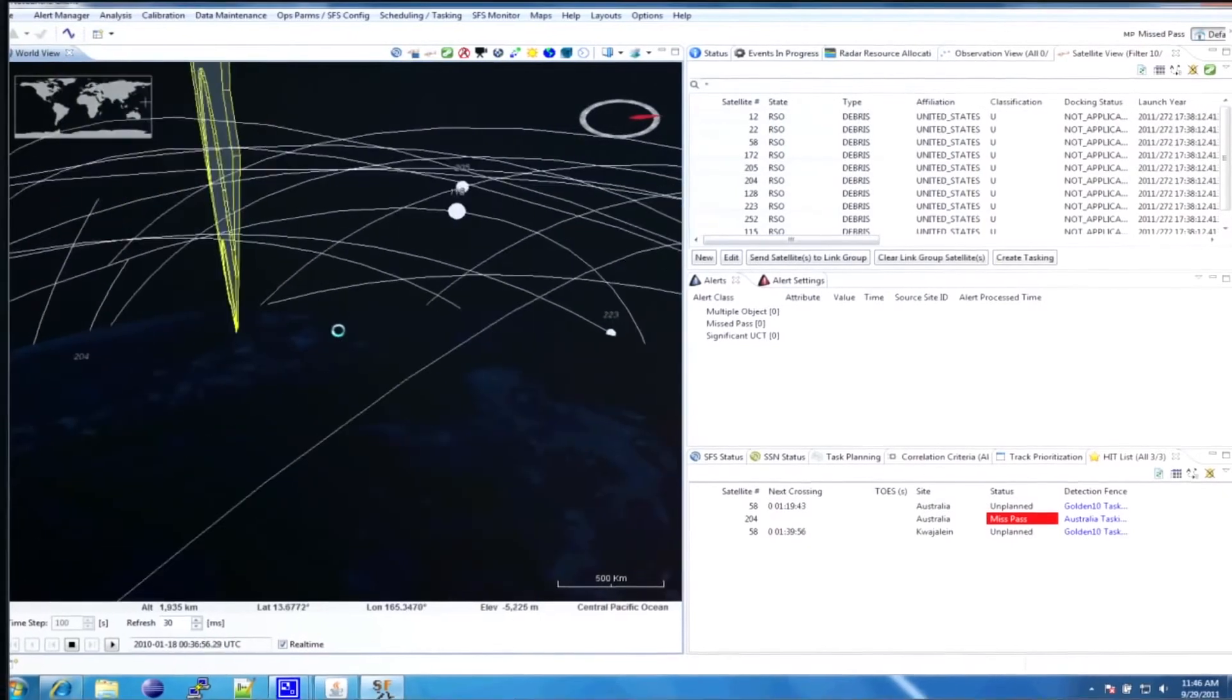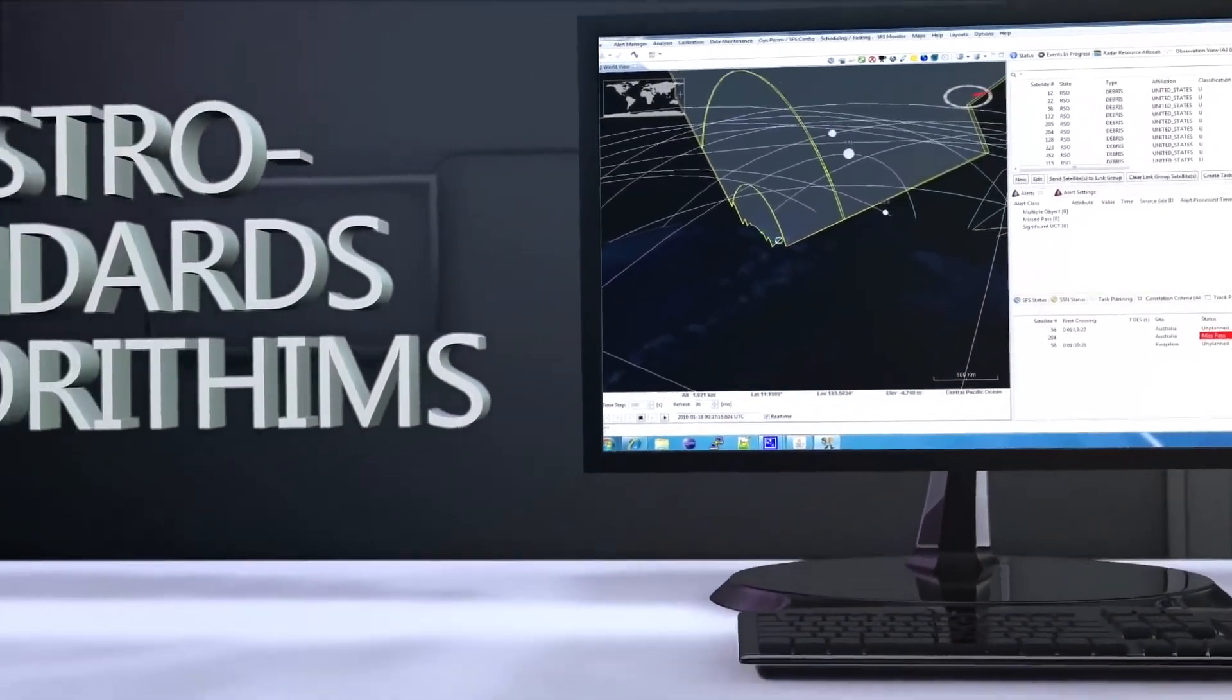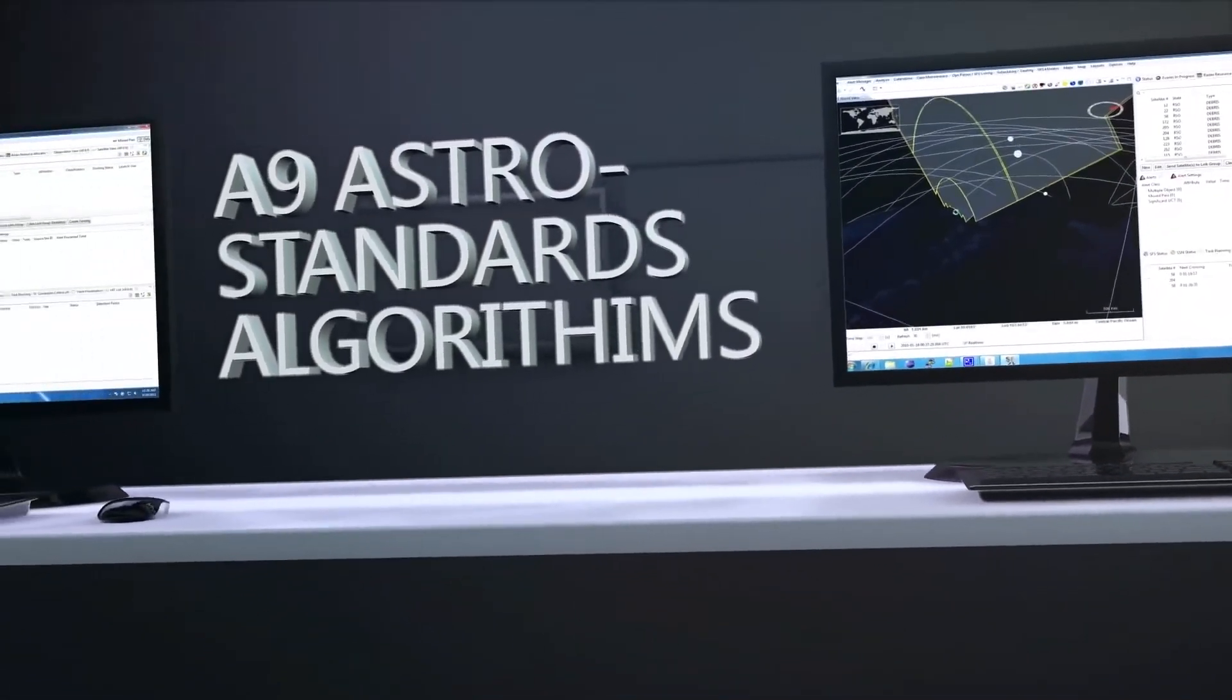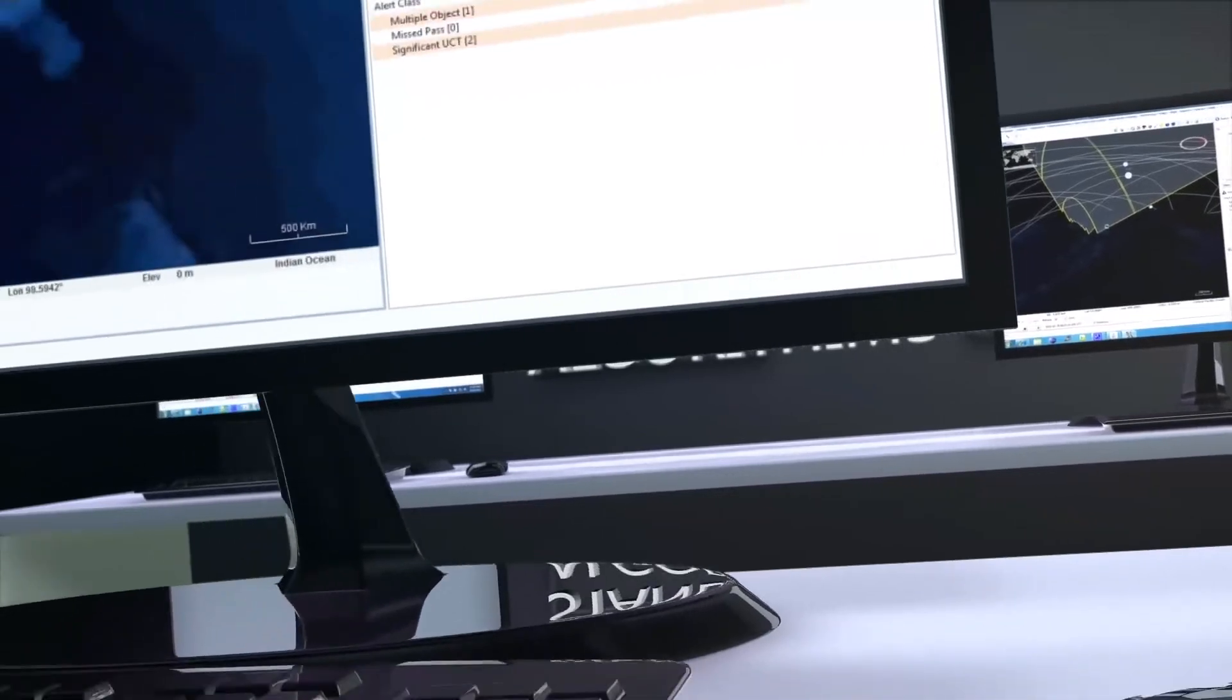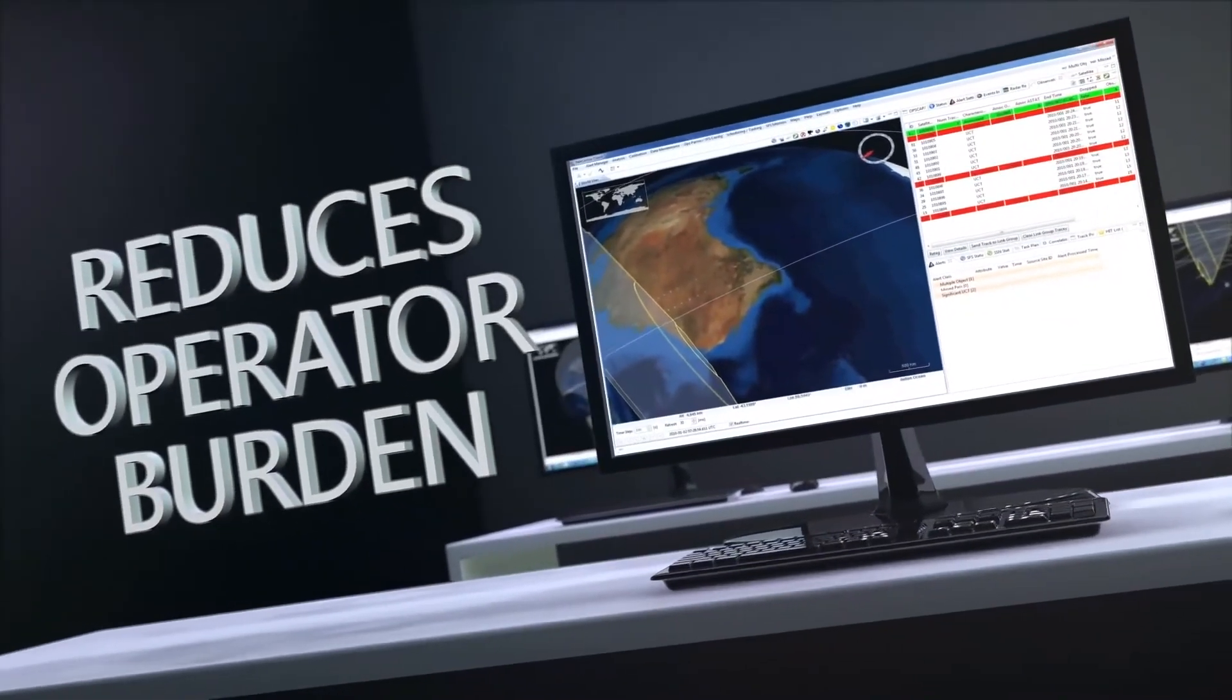Many of these operations are automated through machine-to-machine interfaces. This automation, along with user-defined operational picture displays, contextual GUIs, and un-queued LEO surveillance reduces operator burden.